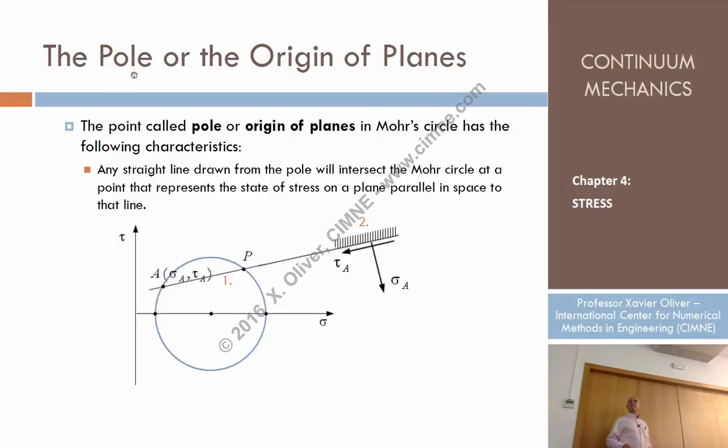The pole. There is a property that says there is always, in the Mohr circle, once I have the Mohr circle, there is just one point, a single point, which is called the pole of the Mohr circle, which has the following properties.